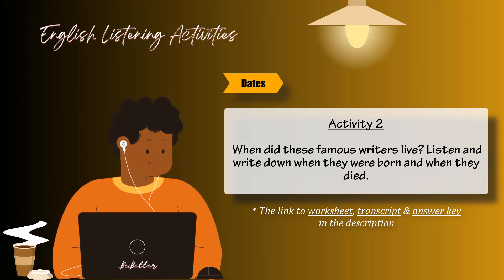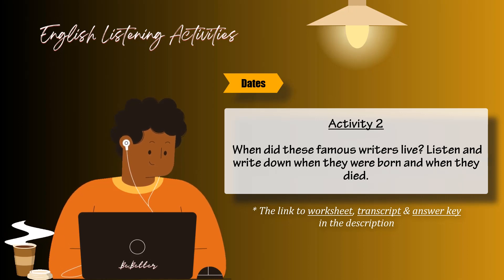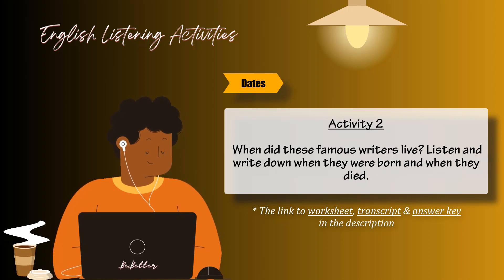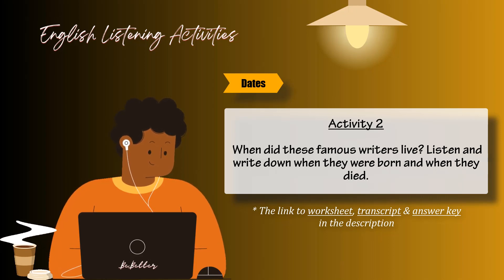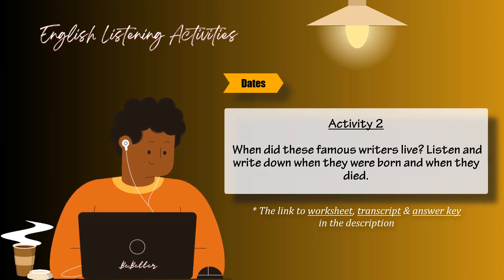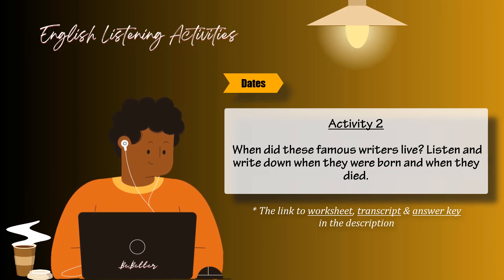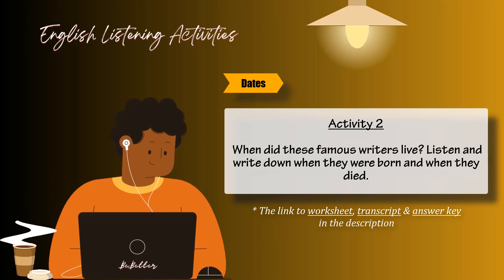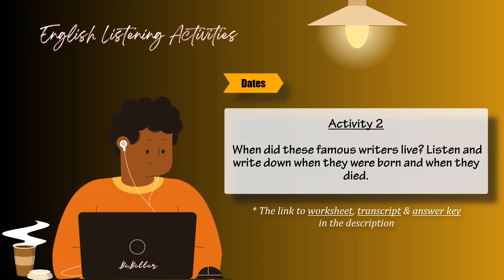Four. Is Ernest Hemingway still alive? No. He died in nineteen sixty-one. When was he born? He was born in eighteen ninety-nine. Five. Do you know when Emily Dickinson lived? She was born in eighteen thirty and she died in eighteen eighty-six. Six. When was Oscar Wilde born? In eighteen fifty-four. And when did he die? In nineteen hundred.